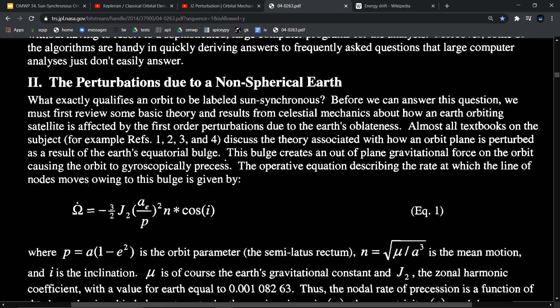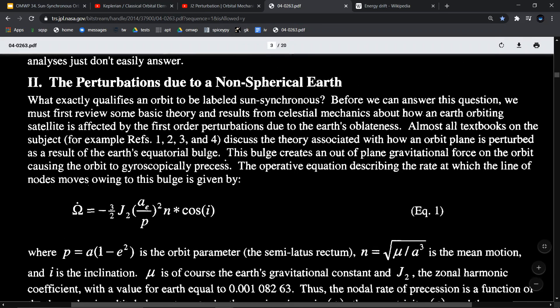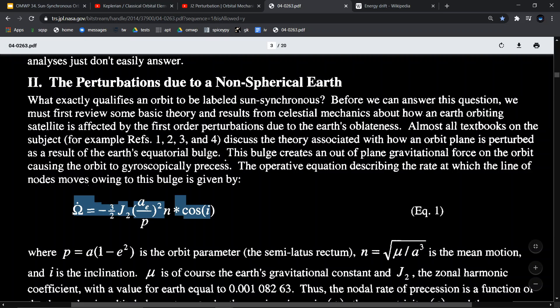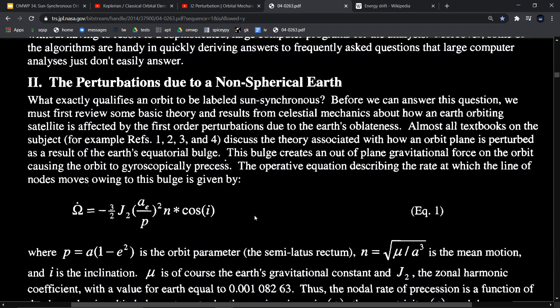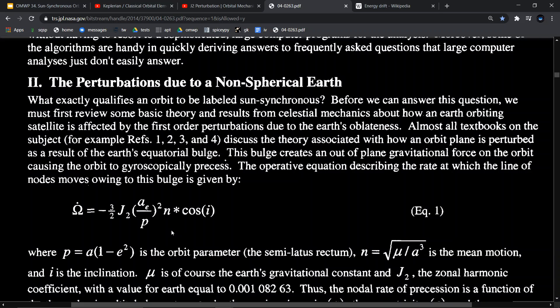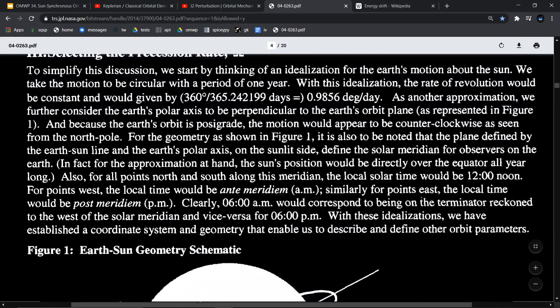One of the most important things he does in this paper is describe the perturbations due to a non-spherical Earth, which is J2. Deeper in the paper, he goes into J3 as well, but I'm just going to be focusing on J2. He gives the time derivative of the right ascension of an orbit with respect to P, which is the orbit parameter, which is a function of the semi-major axis and eccentricity, and I, which is the orbital inclination. This equation describes how that right ascension is changing with respect to time.